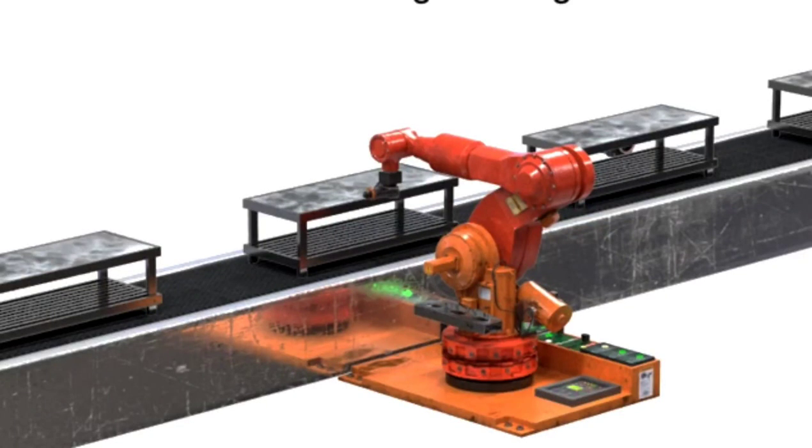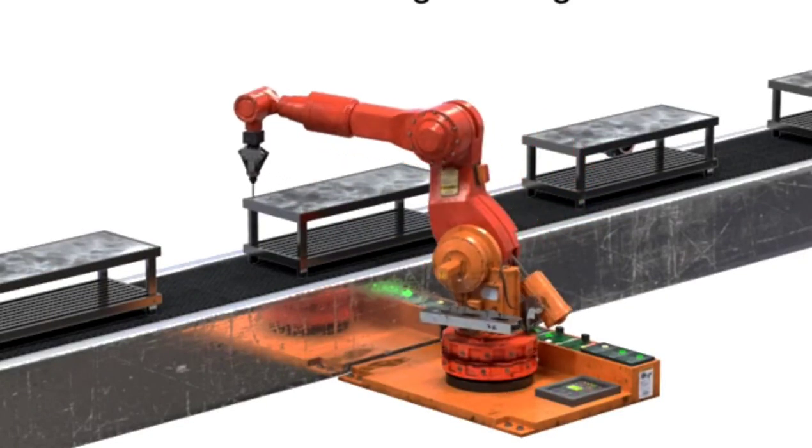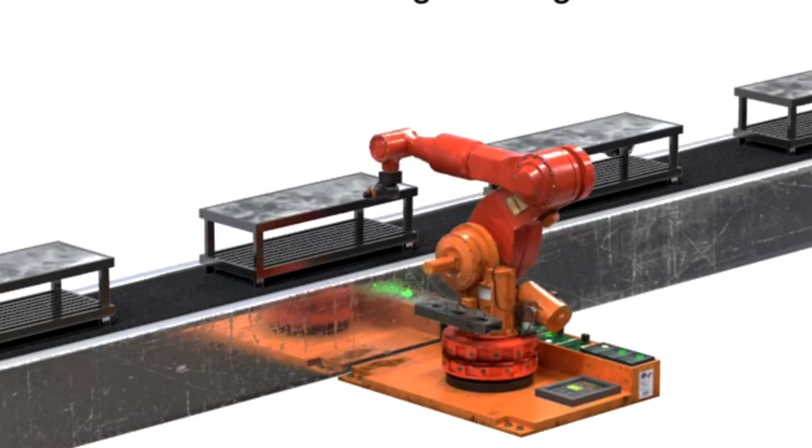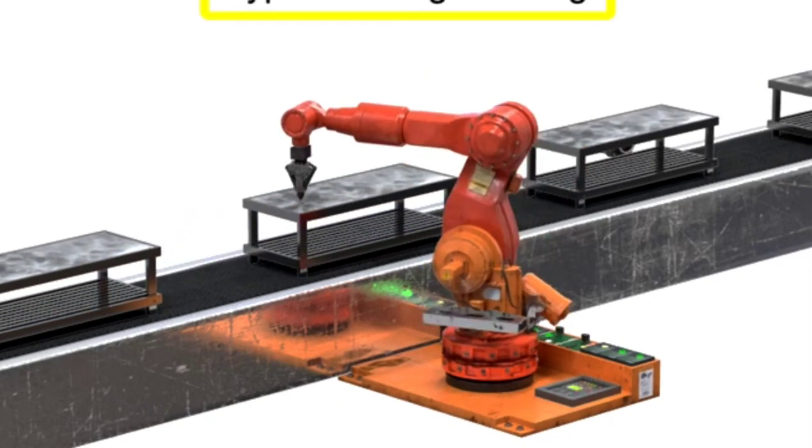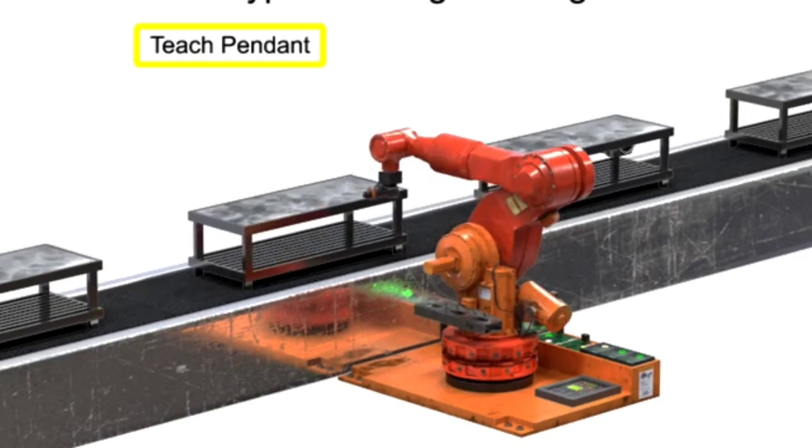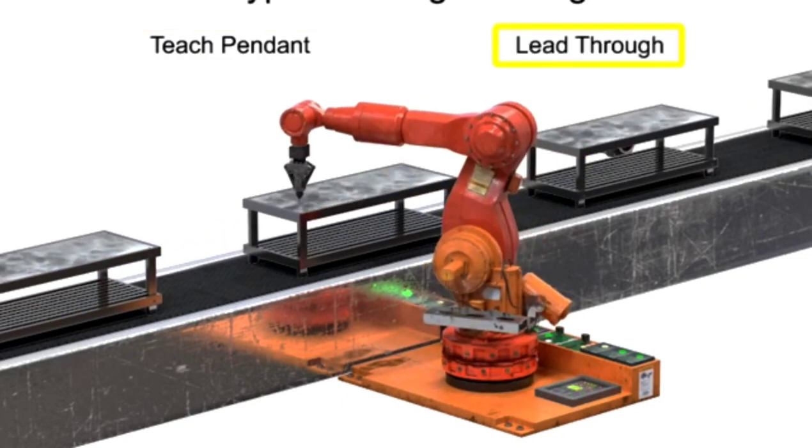Online programming occurs when the robot is online or in an operational mode. The two types of programming we will discuss here are teach pendant programming and lead-through programming.